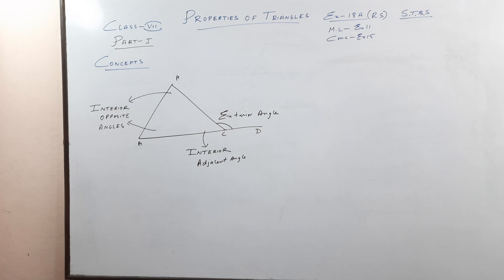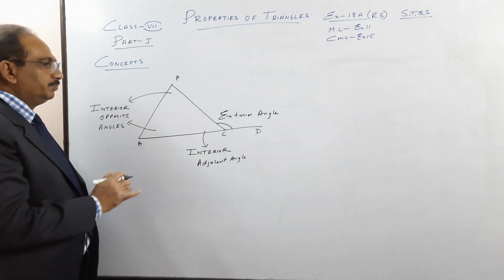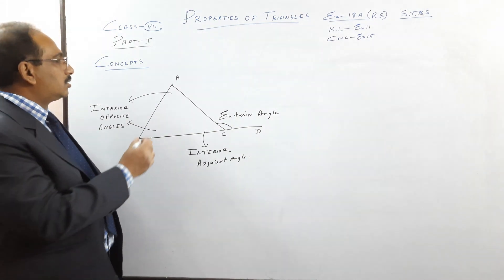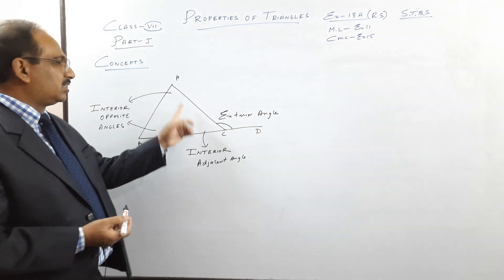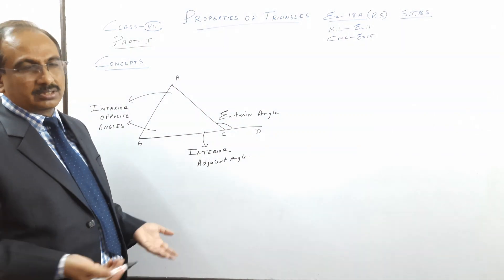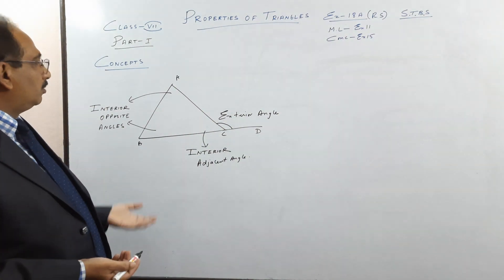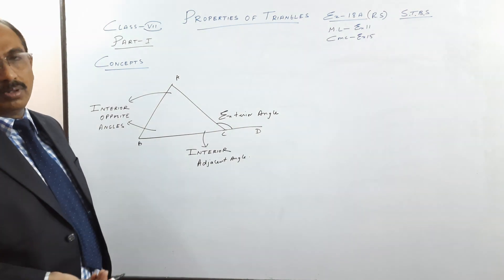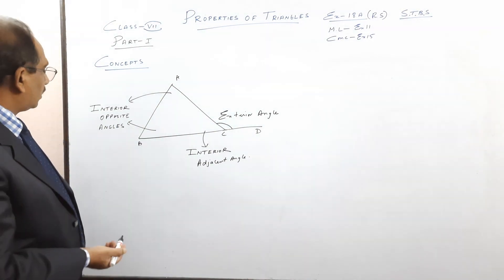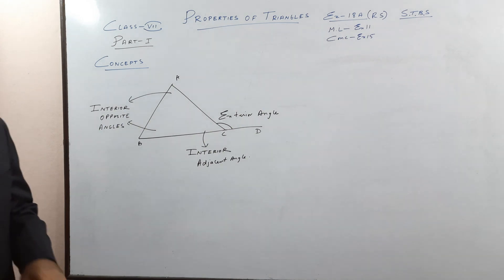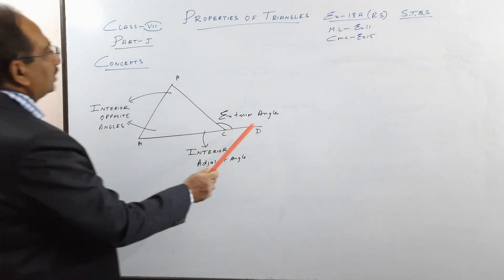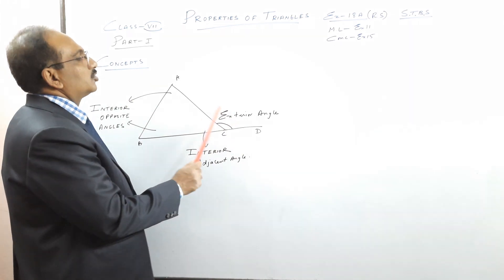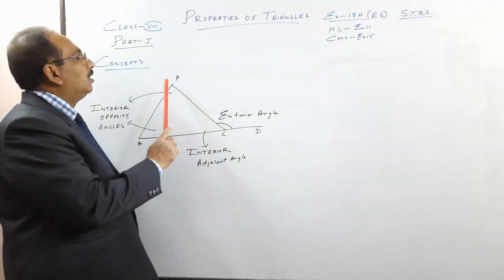Now we go to properties of triangle. A triangle is a figure bounded by three line segments A, B, C. If you produce one side, the angle formed outside is called the exterior angle. We can produce other sides as well to get other exterior angles.